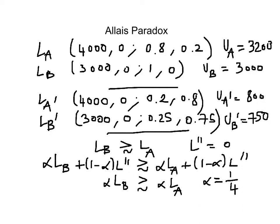But I've just told you, we should have Lottery B' preferred to Lottery A' if the independence axiom were to hold. But I've just told you that in practice, in this example, people chose A' over B'. So this is a violation of the independence axiom.